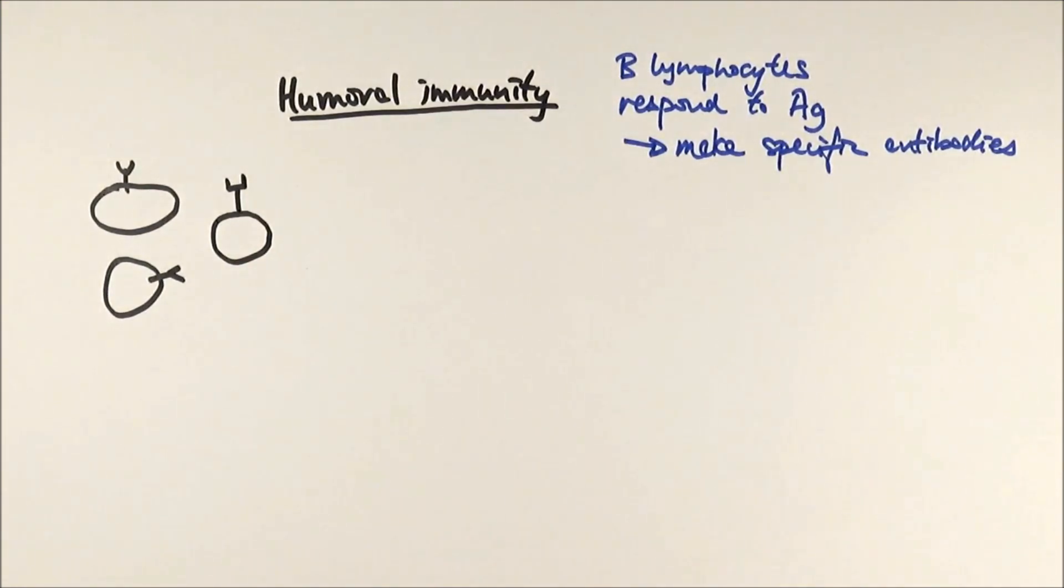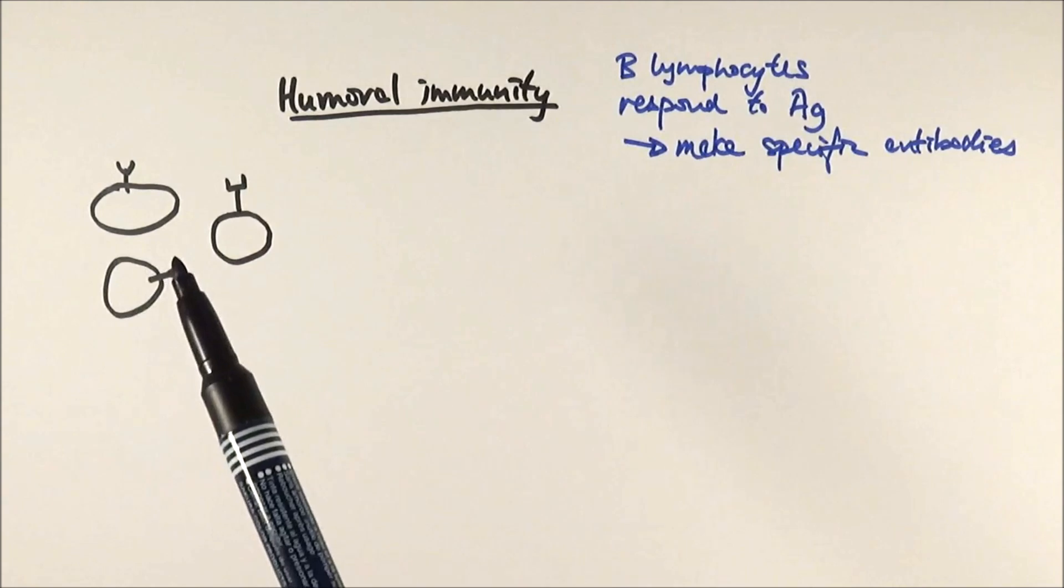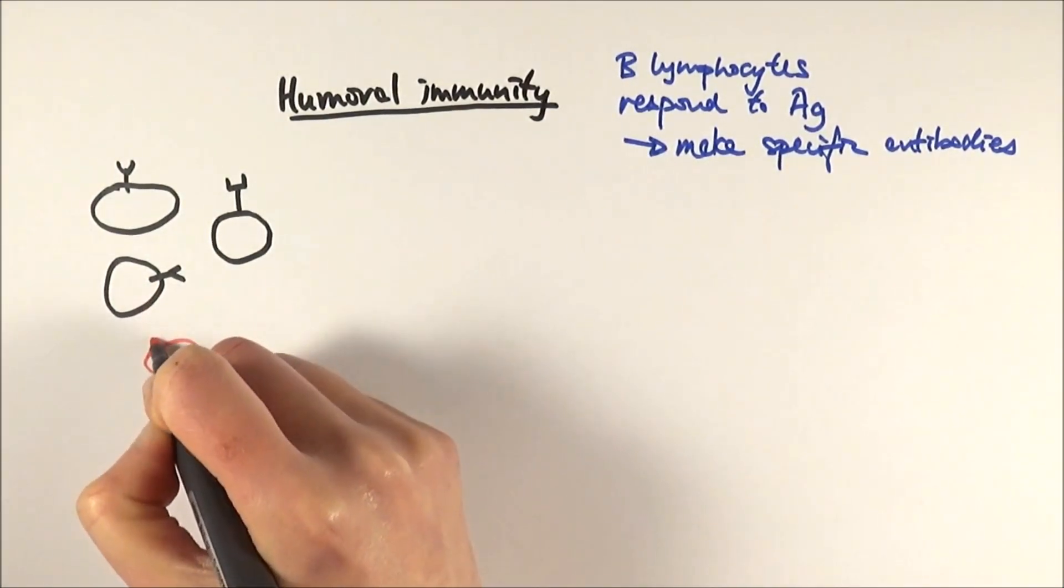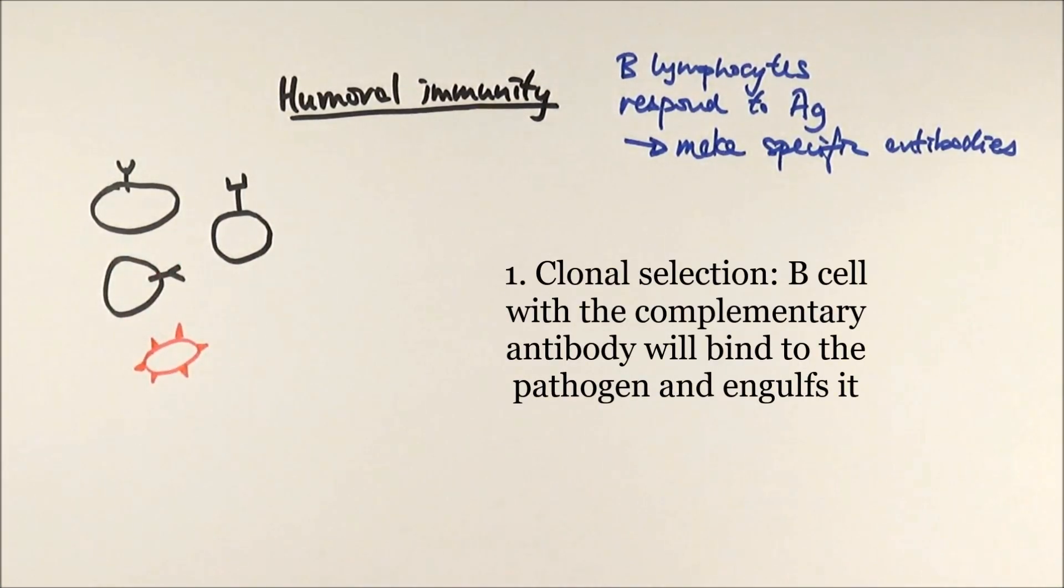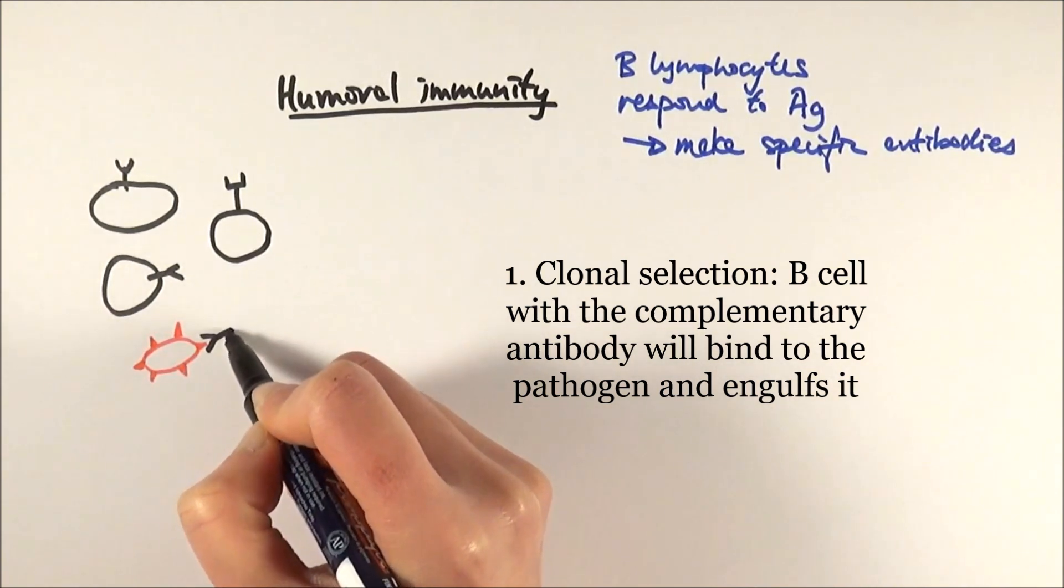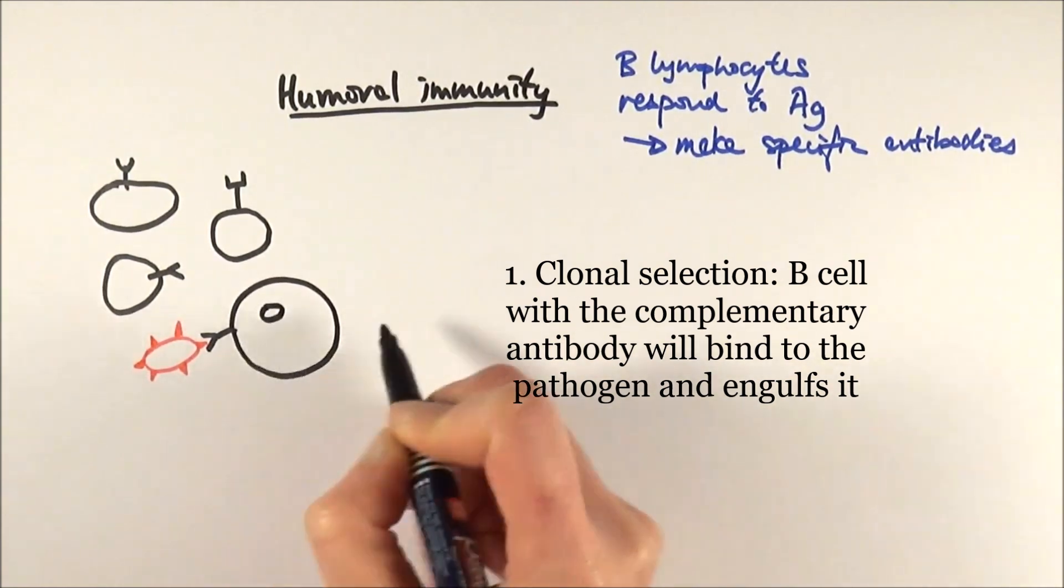We've got different types and in this case it really depends which pathogen we encounter. One of them will be selected if they have a complementary antibody to the antigen. So for example, in this case we've got a pathogen coming in and it's got antigens that look like this. This one will be selected because it's got a complementary sort of Y shape-ish antibody. Because it's complementary it will bind to the pathogen there and then it will allow it to be engulfed.